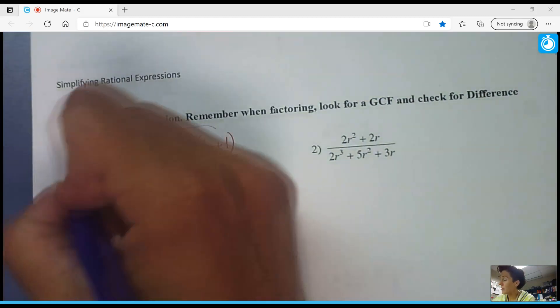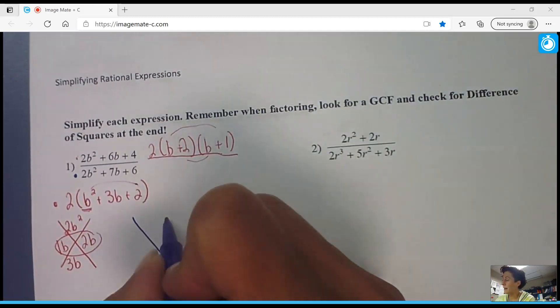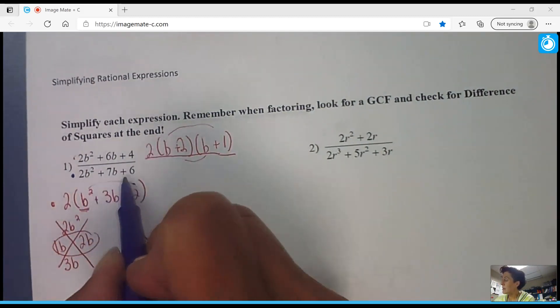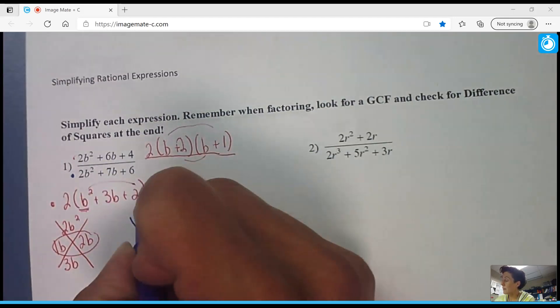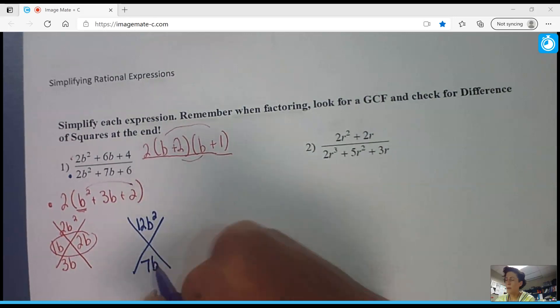Now, as far as the denominator goes, I look for a GCF. I don't see one, so I'll go straight to my X. This time, the top part will be 12, and the bottom will be 7.